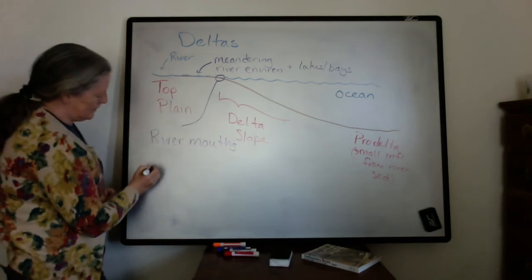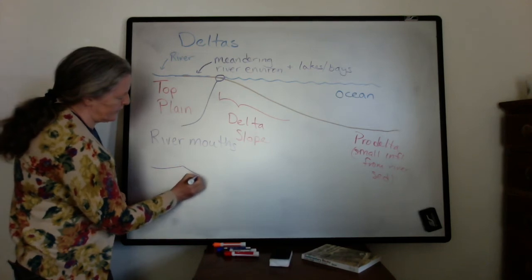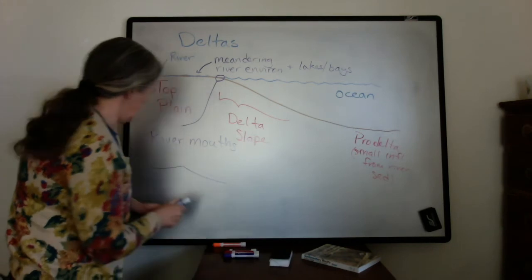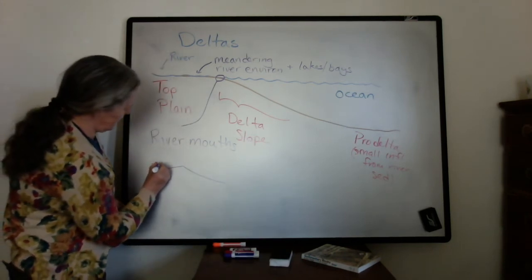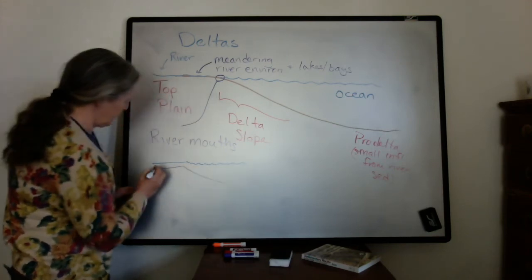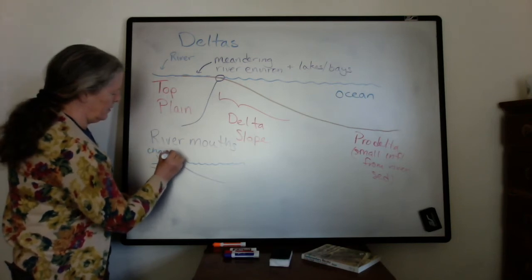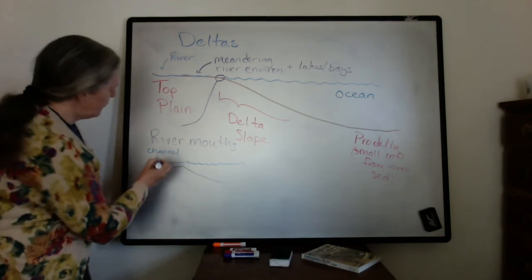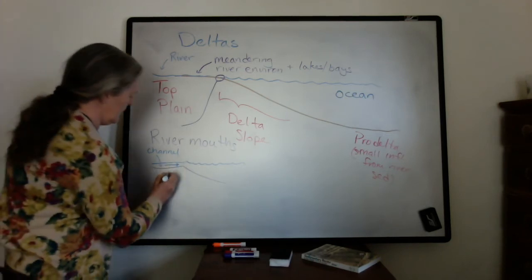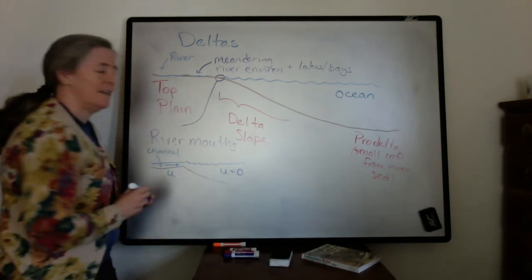If we look at that in detail, what happens is you go from a channel into a standing body of water. This is right through a channel, and then we get into the standing water. So this is a river channel. Here the flow is moving in this direction, and here the flow speed is about zero.